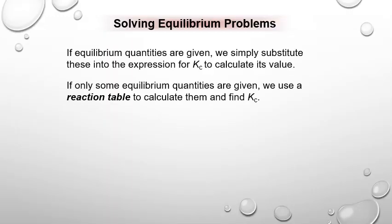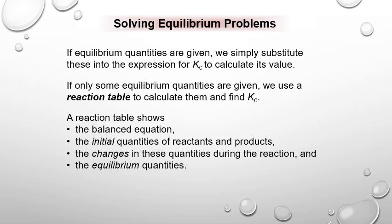When solving equilibrium problems, if equilibrium quantities are already given, you simply substitute into the Kc expression and solve for K. More commonly in AP Chemistry, we're given initial quantities, so we use the Q concept to determine which direction the reaction shifts, then determine equilibrium concentrations. This often requires math manipulations including quadratic equations to solve for X.